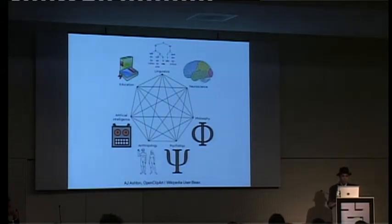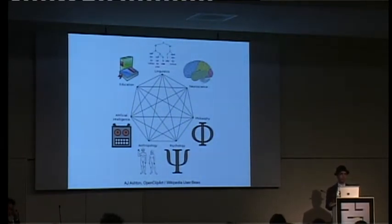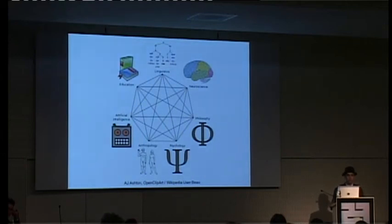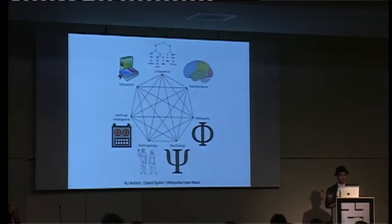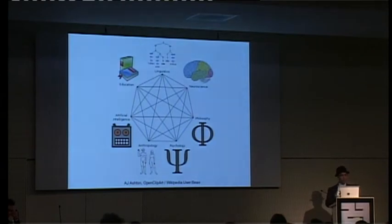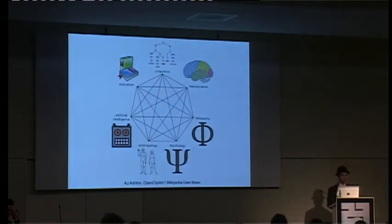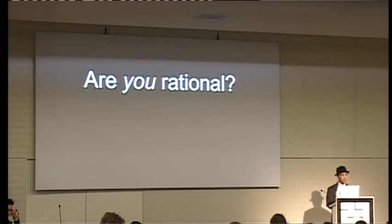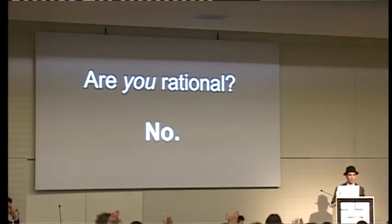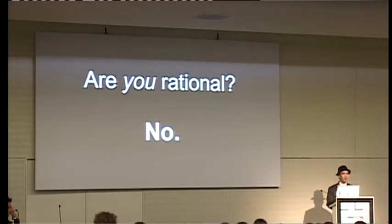Cognitive science is a huge field — probably the most massively interdisciplinary field in modern academia. I am a grad student. My field is social neuroscience. What I study is how empathy works in the brain and how it correlates with motor skills. That's a sub-branch of neuropsychology or cognitive psychology. But even just that little line on this chart is very, very large, and I can only get to a very small portion of it. The portion I'm getting to is: are you rational? How many people think they are? Show of hands. No. You are not — and I'm going to show you how you are not.